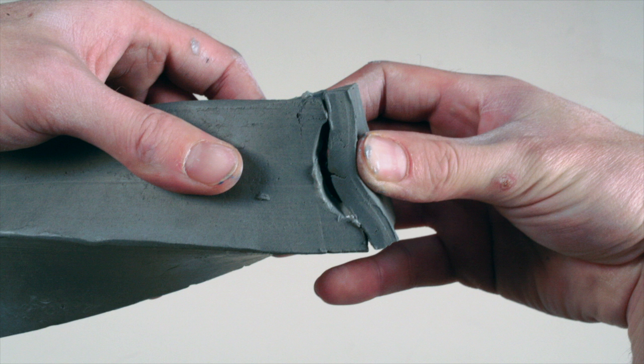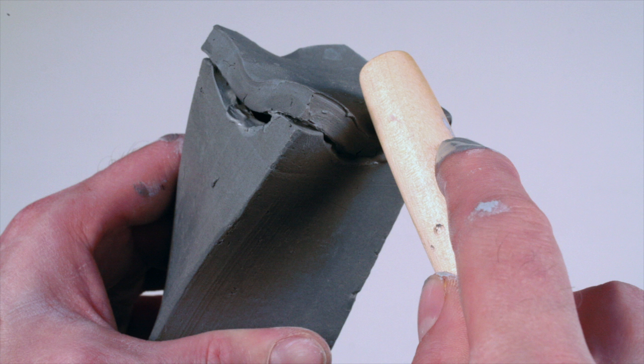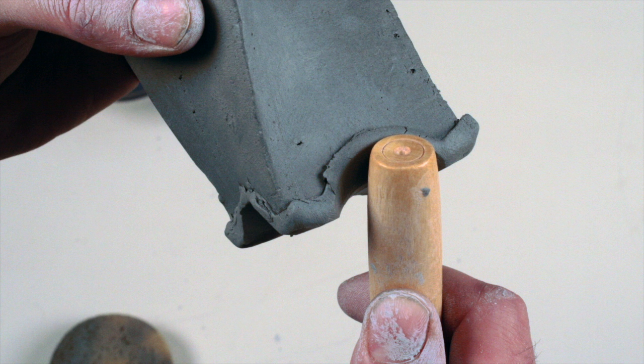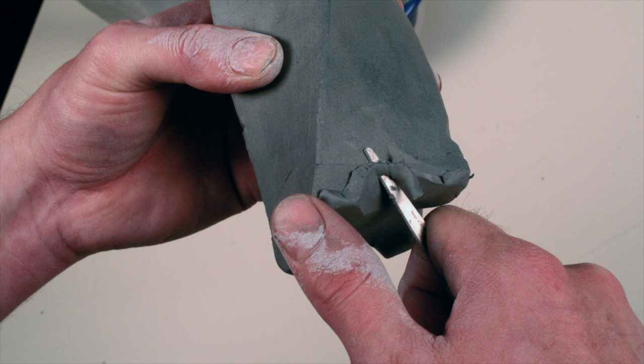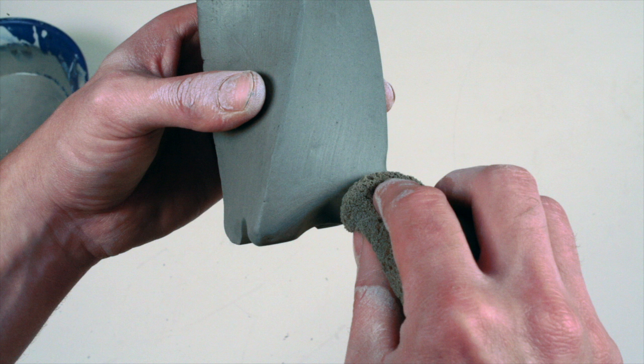After putting the pieces together, use your thumb or the handle of a ceramics tool to compress the edges. Trim away all the excess clay and smooth all of the corners with a sponge.